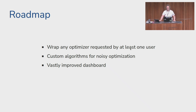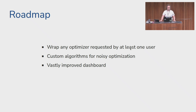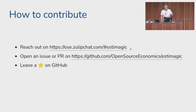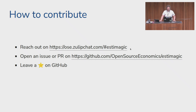The roadmap: first, we spend a lot of time making it really easy to add new optimizers, so if you have any request for an optimizer you've had success with, we can do that. We are also working on custom algorithms for noisy optimization problems — when your objective function has a very strong noise term and standard optimizers don't work well — and we're working on an improved real-time dashboard. To contribute: contact me, sign up for the Zulip channel where we do all development communication, open a pull request or issue on our GitHub page, or leave us a star on GitHub.